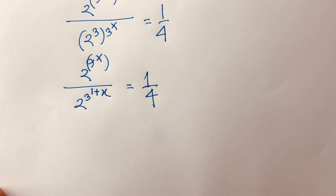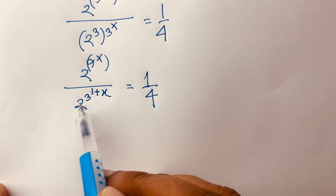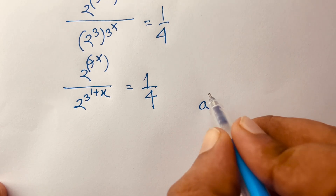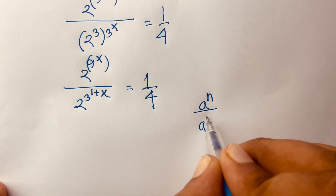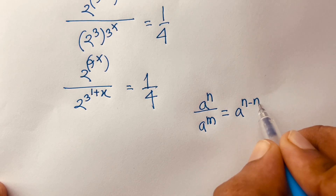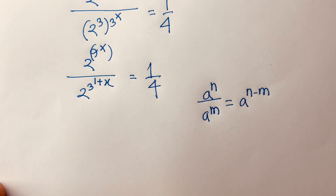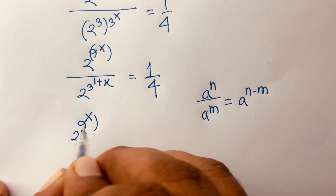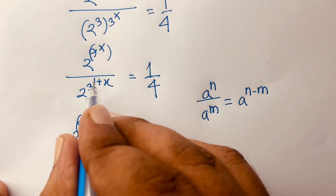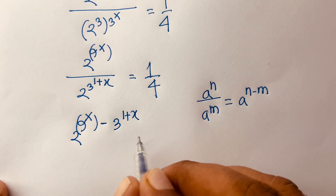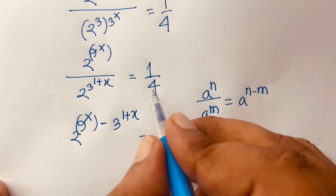Since the bases are the same, we apply the rule: a to the power n over a to the power m is equal to a to the power n minus m. According to this rule, I can say it will be 2 to the power 9^x minus 3^(1+x) is equal to 1 over 4.